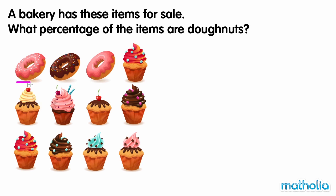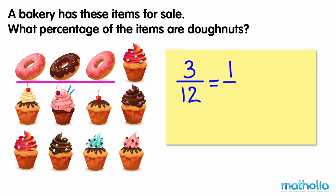There are twelve items, and three of them are doughnuts. Three-twelfths of the items are doughnuts. We can simplify three-twelfths to one-quarter.